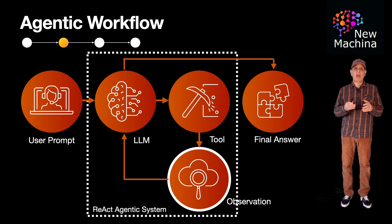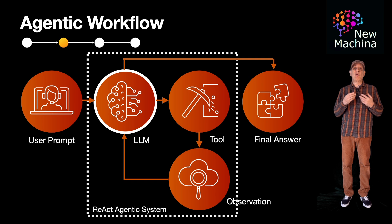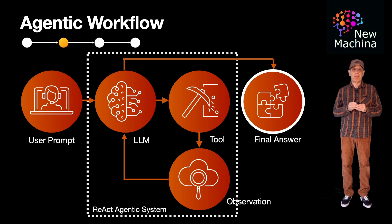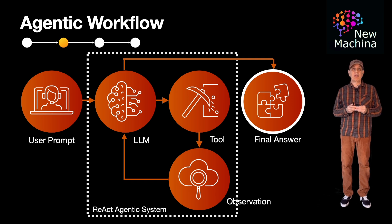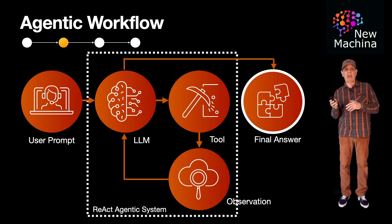Once the tool gets back its results, the agentic system passes results back to the LLM. The LLM then reasons through the results, and if it still needs more information, it can direct the system to call the same tool again or call another available tool. Otherwise, if the LLM can determine the final answer, it generates the final response, which is returned to the user. When invoked, the ReAct agentic system alternates between reasoning and action. Like the RAG pattern, this ReAct agentic workflow is another design pattern that has received a lot of traction in the community.